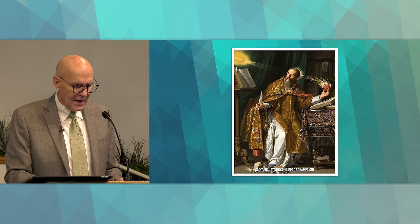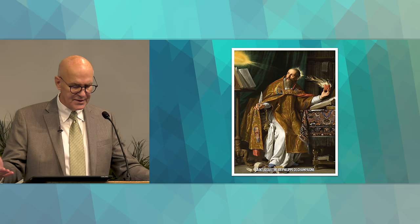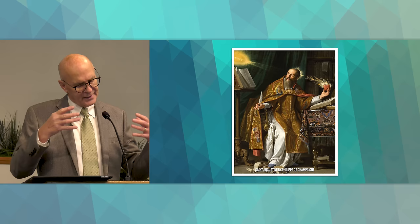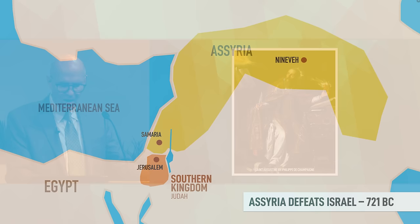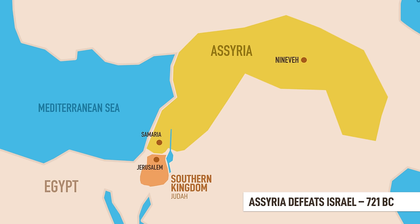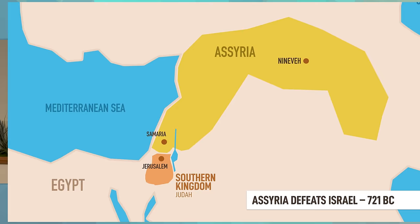In a general sense, the Minor Prophets can be divided into three main periods after the time of the United Kingdom. Knowing when they lived will give you context and help you memorize the names of the books. The key date is 721 BC — the year the Northern Kingdom of Israel was defeated by the Assyrian army.